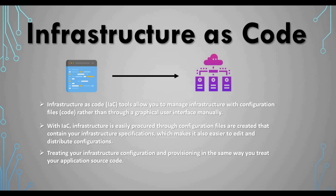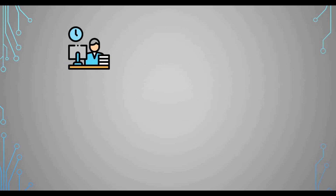The basic idea is that you are going to treat your infrastructure the same way you treat your application source code — that's the overall concept of Infrastructure as Code. We also talked about tools like Terraform, which is a highly popular HashiCorp tool for IaC, and also Ansible. You can look at those video tutorials as well. You need to understand Infrastructure as Code before we talk about GitOps.